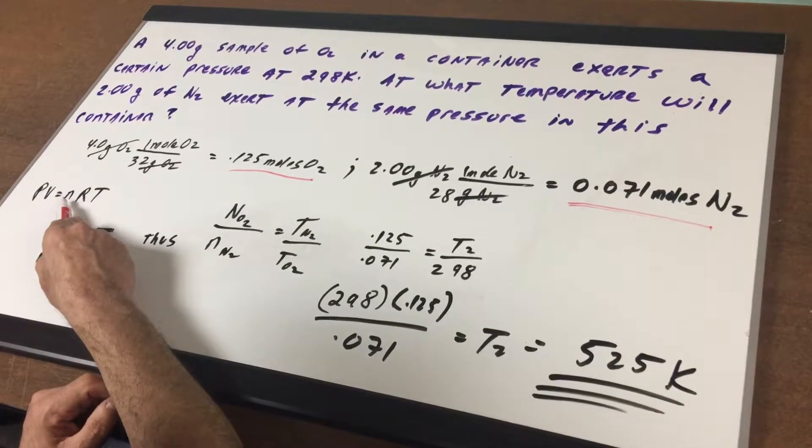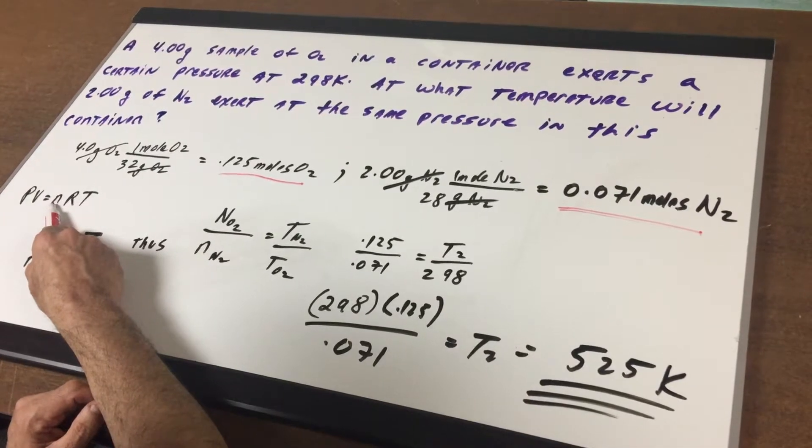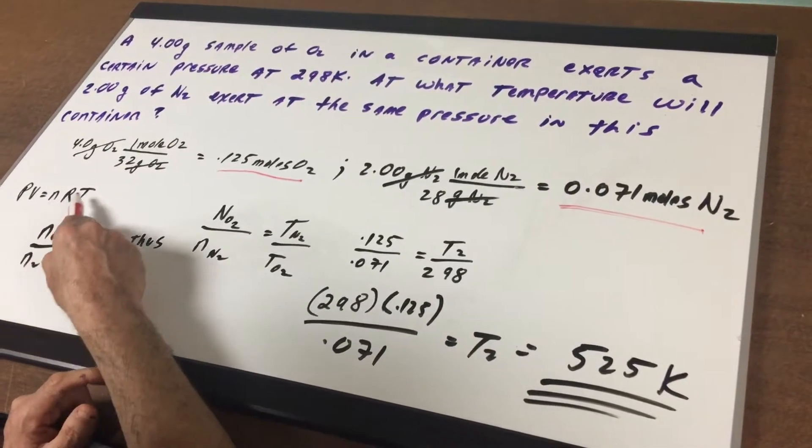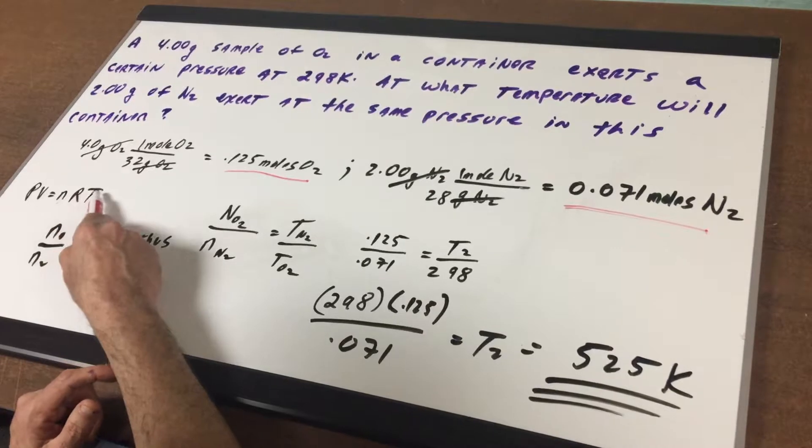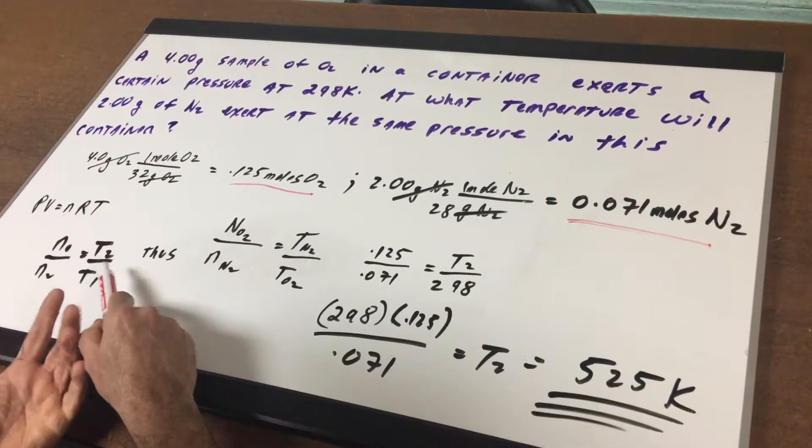If we know the moles of one, and we know the moles of another, and we know the temperature of one of the component moles, we can find the other temperature.